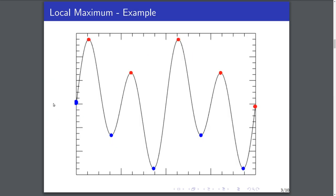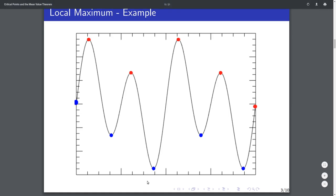Here's an example of some local maxima and local minima. Highlighted in red are the local maxima, and highlighted in blue are the local minima. Note that the domain of the function plays a very important role here. If this function were to continue on downwards, this would no longer be a local minima. So whenever you're discussing local minima and maxima, you need to keep into account the domain of your function.